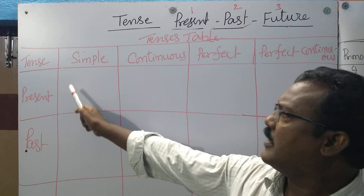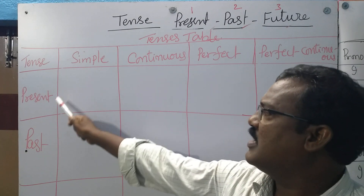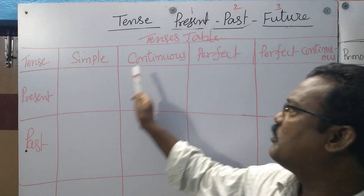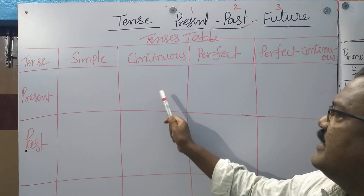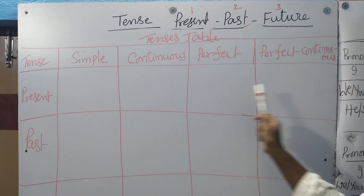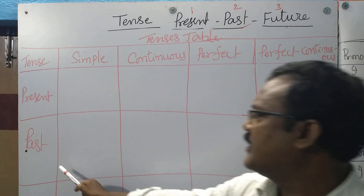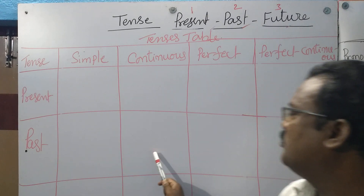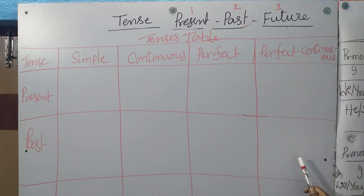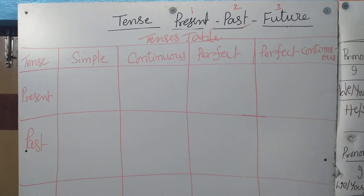See here: present simple, present continuous, present perfect, present perfect continuous; past simple, past continuous, past perfect, past perfect continuous; future simple, future continuous, future perfect, future perfect continuous. All simple tenses of present, past, future are in the first column; all continuous tenses in the second.